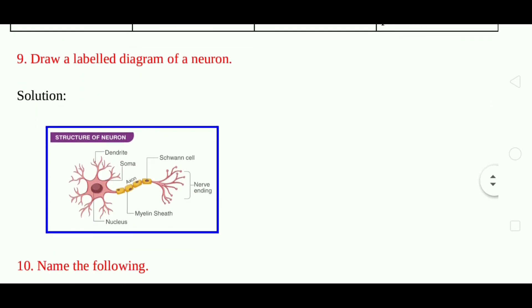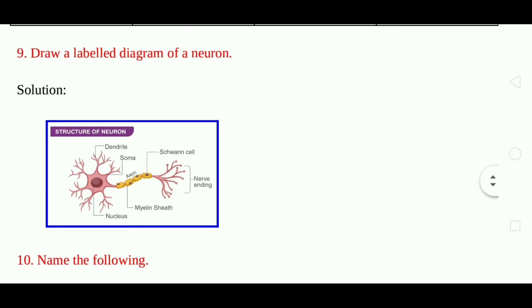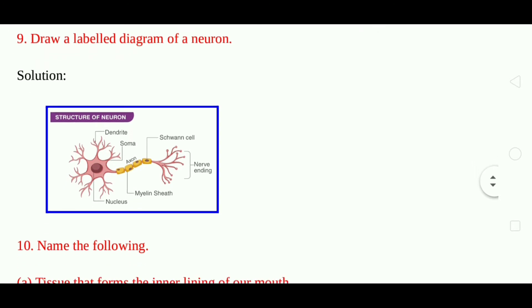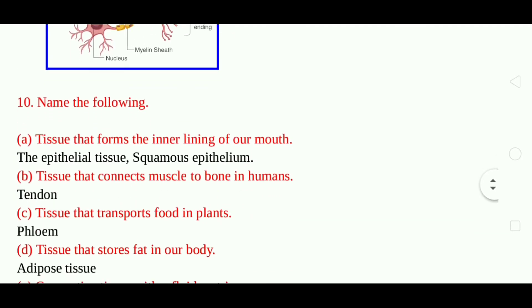Question 9: Draw a labeled diagram of the neuron. The parts to be labeled are: dendrites, soma, axon, nucleus, myelin sheath, Schwann cell, and nerve ending.